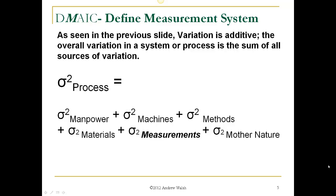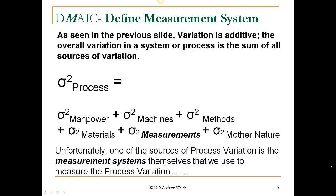Variation is additive. The overall variation in a system or process is the sum of all sources of variation. The variance of the process is equal to the variance from manpower, machines, methods, raw materials, measurements, and Mother Nature. Unfortunately, one of the sources of process variation is the measurement systems themselves that we use to measure the process. Most of us take a result from the laboratory or some instrument at face value and never question how much variation is being provided by that number.